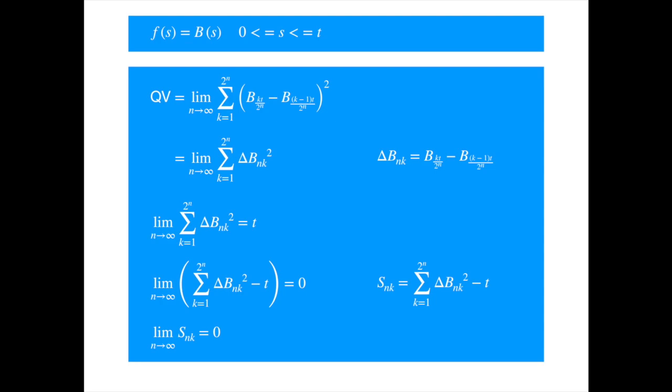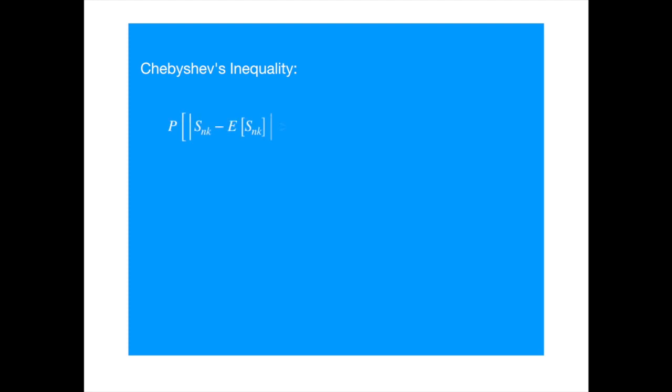To prove this, we will use Chebyshev's inequality. All it says is that the proportion of values of a random variable that have a distance of more than epsilon from the mean is less than or equal to the variance divided by the square of epsilon. This will help us establish that the probability that s deviates too much from 0 can be made as small as we like by increasing n, and the Borel-Cantelli lemma will then help us translate this into almost sure convergence.